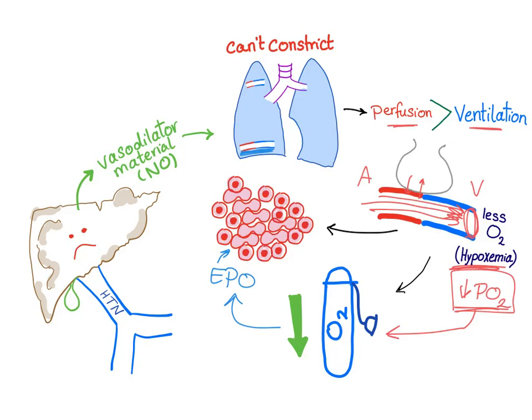Also note that patients with hepatopulmonary syndrome get priority in liver transplant. Because if we wait too long, the damage may become permanent and there will be no hope. They get priority.